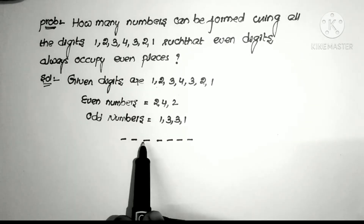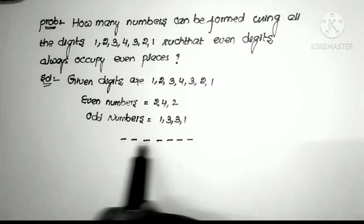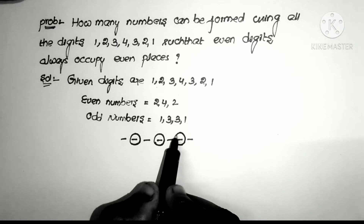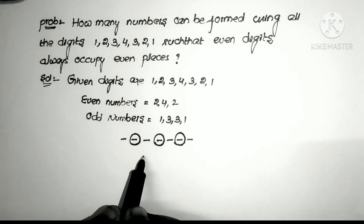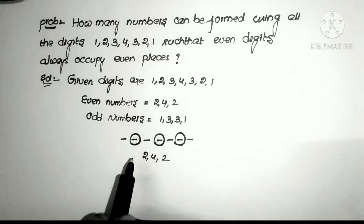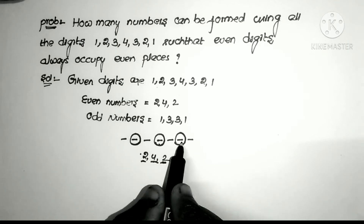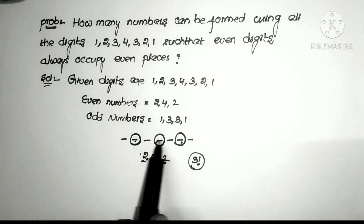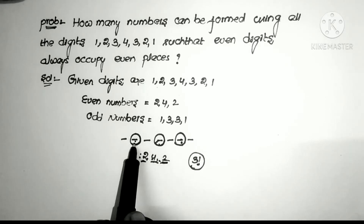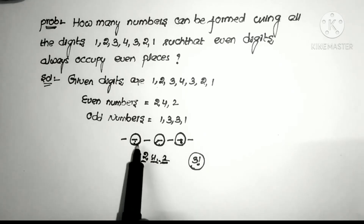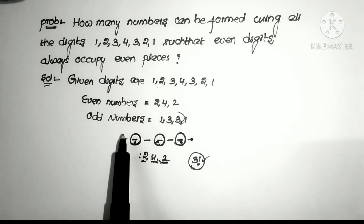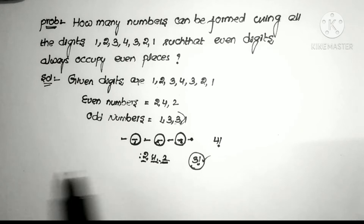We have 7 digits, so we take 7 gaps. The even places are the second, fourth, and sixth places. We must place the even numbers in the even places. We have three even digits and three even places, so we can fill those three gaps in 3! ways. The remaining four gaps can be filled by the four odd numbers in 4! ways.